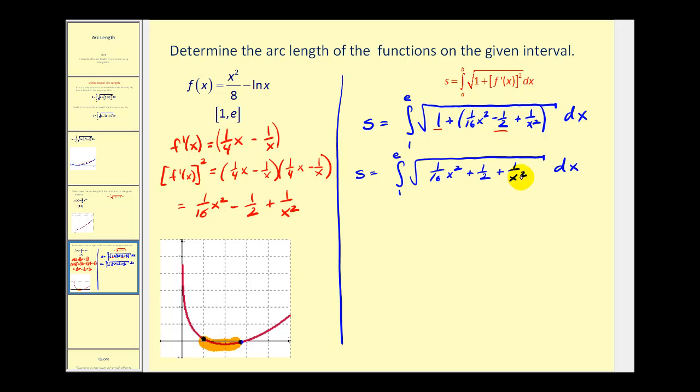Now, it may not look like it, but this is actually a perfect square. One-fourth x times one-fourth x would give us one-sixteenth x squared. And one over x times one over x would equal one over x squared.